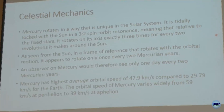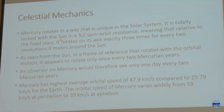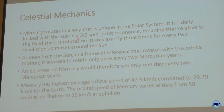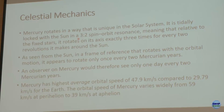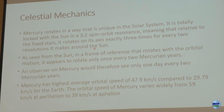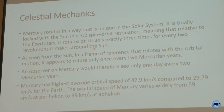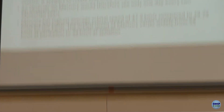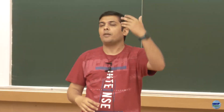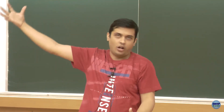In celestial mechanics Mercury is tidally locked with the sun, but with a 3:2 spin-orbit resonance rather than the 1:1 we see with Earth and Moon. From the perspective of a fixed external observer — a fixed star reference — Mercury rotates on its axis three times before completing two revolutions around the sun.